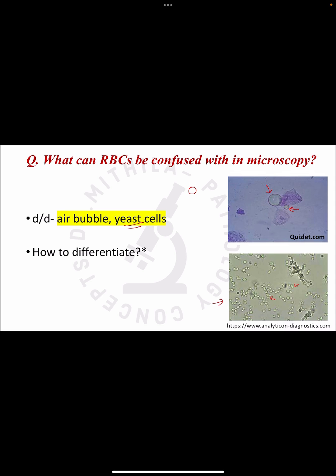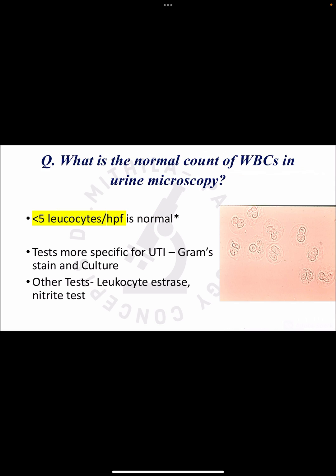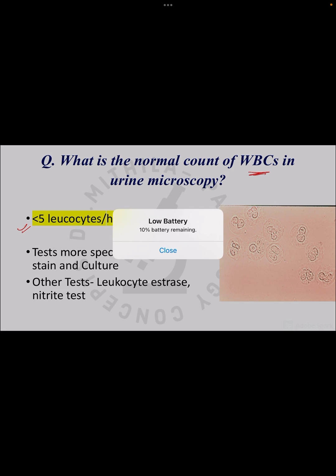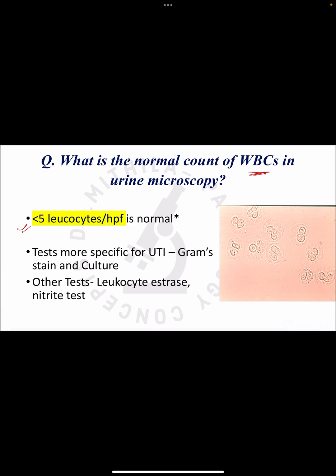This differentiation is commonly asked in the viva. The next question is: what is the normal range of WBCs in urine microscopy? Less than 5 WBCs per high power field is normal. More than 5 WBCs signifies a urinary tract infection. However, more specific tests for UTI are urine culture and Gram stain. Additional tests for UTI diagnosis include the leukocyte esterase test and the nitrite test.